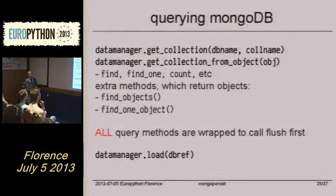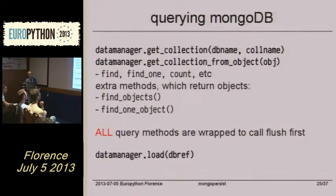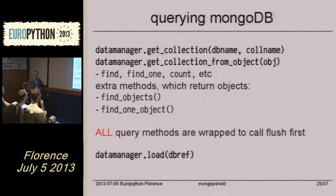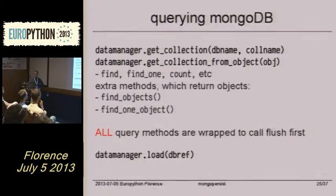The two easy ways to get the collection are by database name or collection name, or just use an object directly. You can use the usual Mongo collection methods — find, find_one, count, whatever — and they will be wrapped with flush.